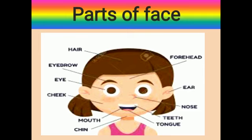Now let's learn about the different parts of the face. On the face, we have two eyes, two ears, one nose, two cheeks, one chin, one mouth with an upper lip and a lower lip, one tongue within the mouth, and teeth within the mouth. So these were the parts of the face.